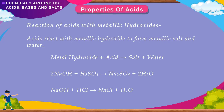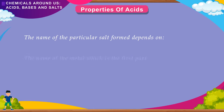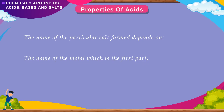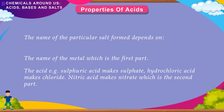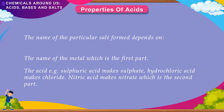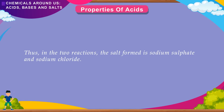NaOH + HCl → NaCl + H₂O. The name of the salt formed depends on: the name of the metal (first part) and the acid (second part). For example, sulfuric acid makes sulfate, hydrochloric acid makes chloride, and nitric acid makes nitrate. Thus, in these two reactions, the salts formed are sodium sulfate and sodium chloride.